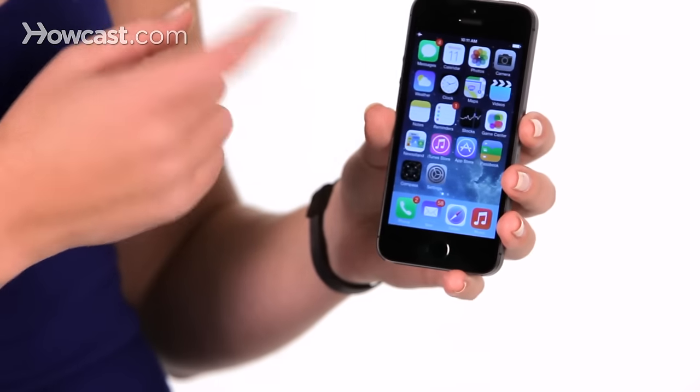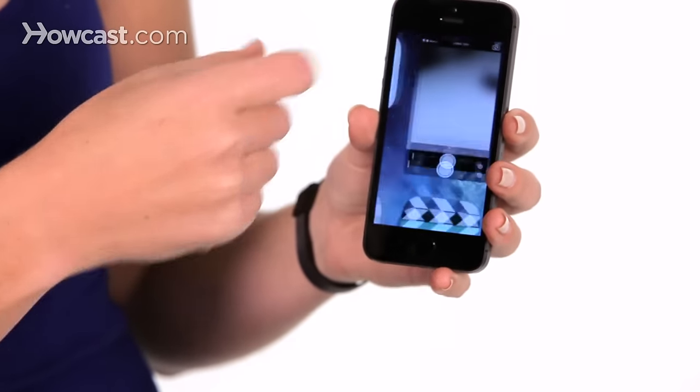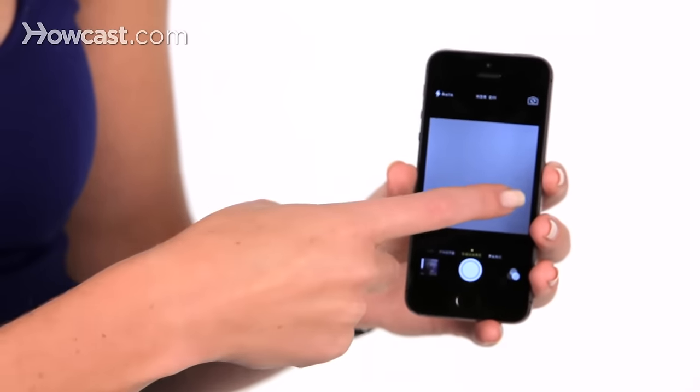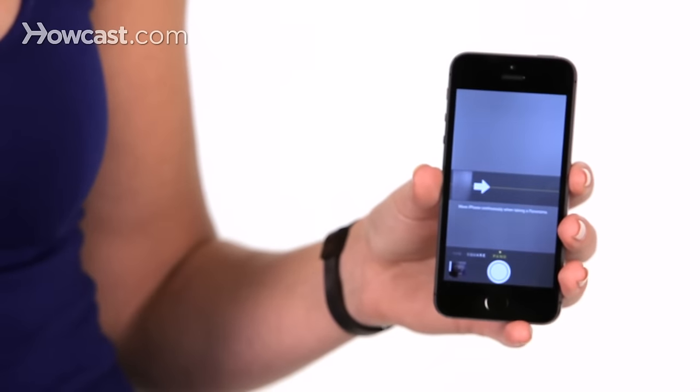So first thing you want to do is open up your camera app, and when it opens up, it's going to open up to the regular photo setting. You want to slide over, it'll go to the square setting, and then again to get to the panoramic picture setting.